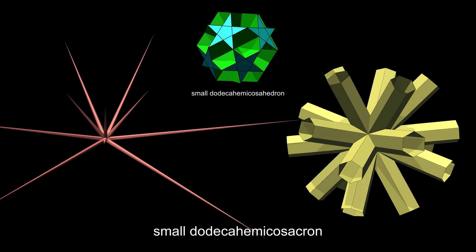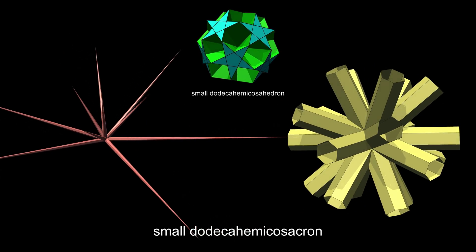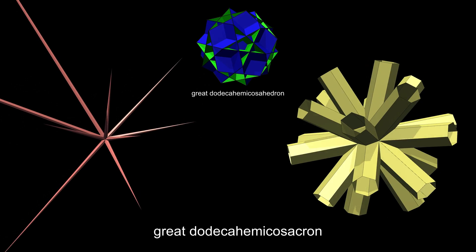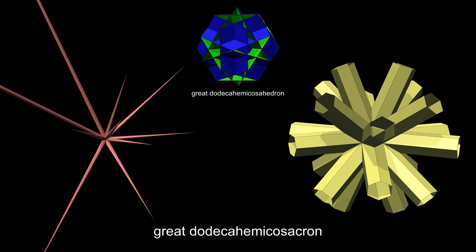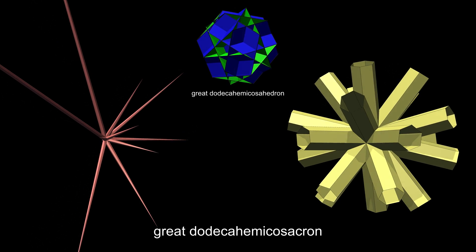The dual of the small dodecahemidodecahedron has ten spikes or prisms. Again, the next figure, the dual great dodecahemidodecahedron, is visually the same.